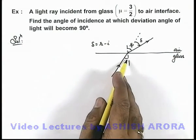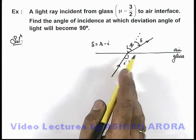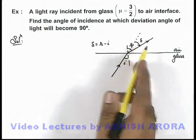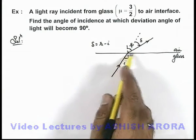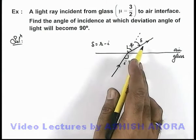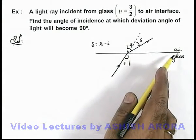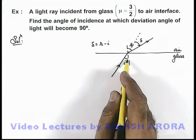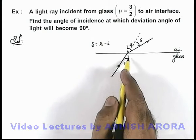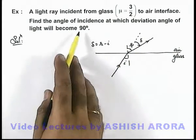Now in this situation, if we increase the value of incidence angle, delta will increase. The maximum value of r can be increased up to 90 degrees when the refracted ray will graze along the surface, when i will be the critical angle. Then also we can see the value of deviation angle will be less than 90 degrees.